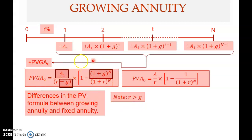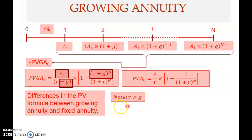Note that this formula can only be applied when R is greater than G — the growth rate must always be less than the required rate of return or discount rate. This is a reasonable assumption, as G can generally never exceed R, especially in the long run.